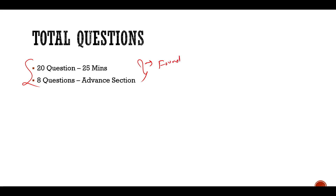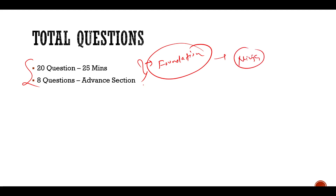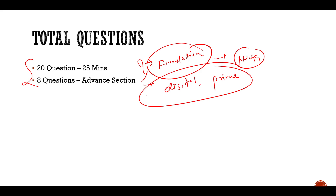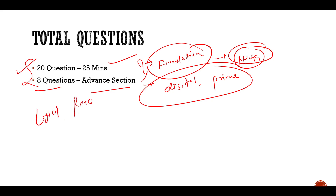If you clear the foundation section, you will definitely qualify for TCS Ninja at least. The advanced section is important for TCS Digital and TCS Prime. So we have three positions: for foundation, 20 questions in 25 minutes. To get TCS Ninja at least, we should have eight questions correct. In the advanced section, questions from logical reasoning will also be there.